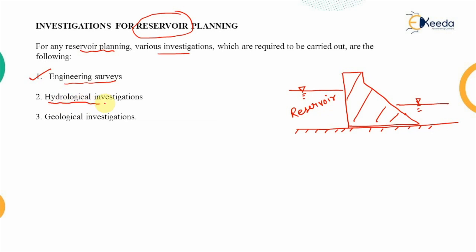The second category is hydrological investigations — what is the natural rainfall condition in the particular area, what is the return period of a particular storm, and what is the capacity of the channel to carry water. The third one is geological investigation, meaning what is the structure of the rock or earth crust beneath the reservoir.